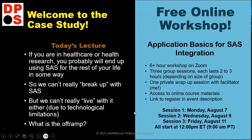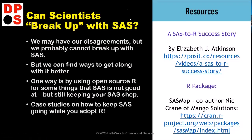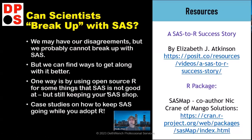Now back to our regularly scheduled program. Can scientists break up with SAS? We may have our disagreements with SAS, but we probably can't break up with it. We can find better ways to get along — ways of offloading some of our work from SAS to R where R is better at it. One way is by using open source R for some things SAS is not good at, but still keeping your SAS shop.